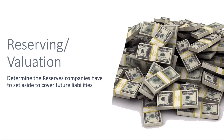Moving on to reserving. Reserving actuaries calculate the amount of money companies have to set aside to cover their future liabilities. This amount of money is known as reserves. The liabilities here are also referred to as unpaid claims — basically any future payment to claims that occurred on or prior to the financial statement reporting date. Because unpaid claims is an important item of the financial statement, reserving actuaries are heavily involved in reporting as well.